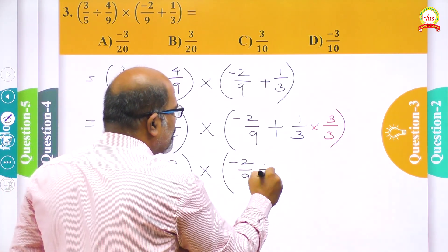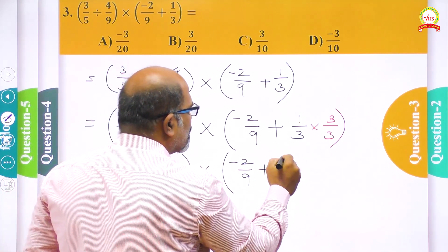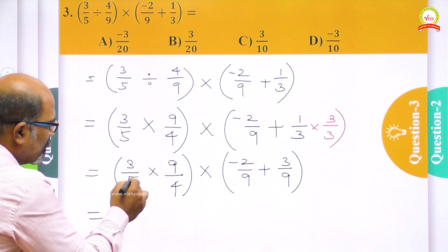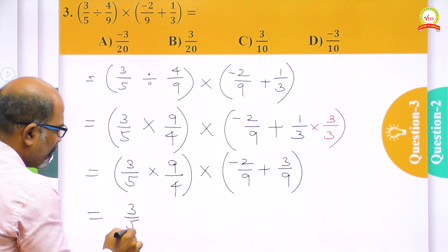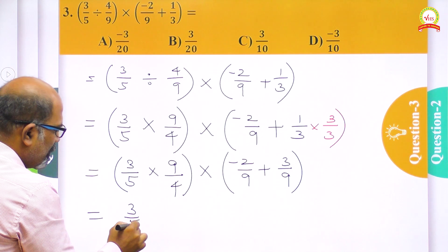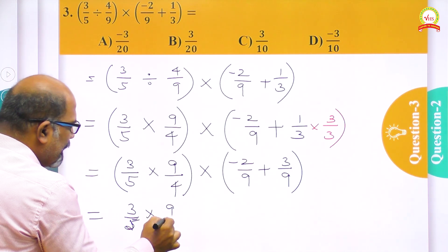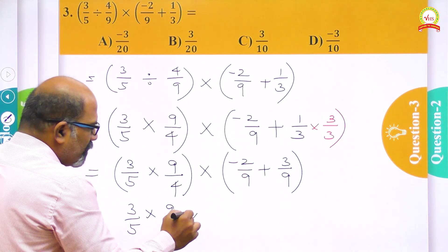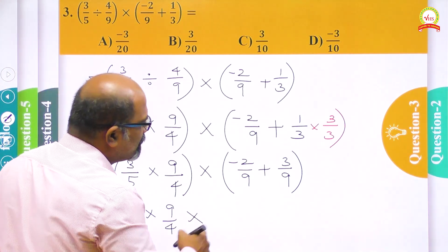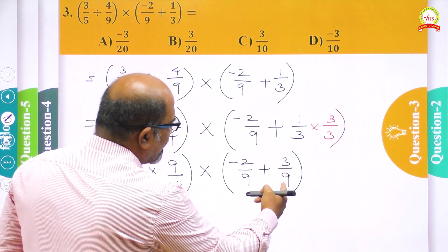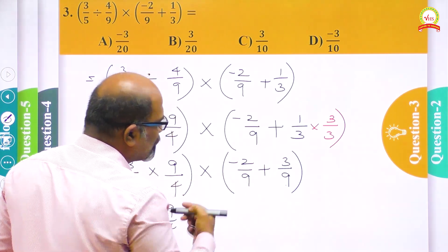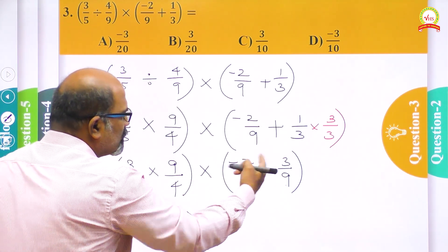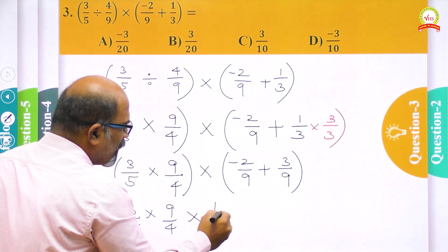So we have 3/5 into 9/4 multiplied by (minus 2/9 plus 3/9). That is 3/5 multiplied by 9/4 multiplied by (3 minus 2)/9, which is 1/9. We are subtracting the numerators: 3 minus 2 gives 1/9.